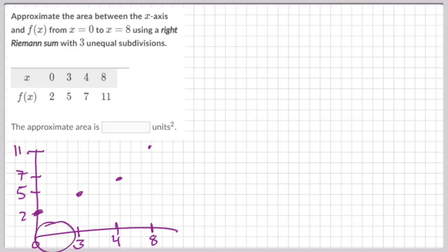This one says three unequal subdivisions. Subdivisions? Three? Look, we got one, two, three. And this is three, this is one, and this is four. That's the distance of each of those. They're unequal, you see that? That's why it says unequal.